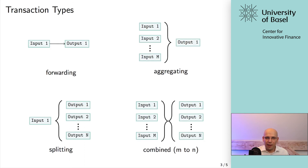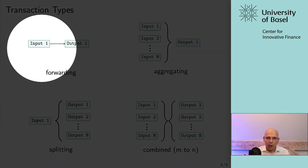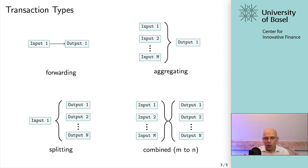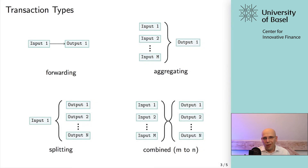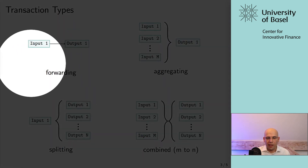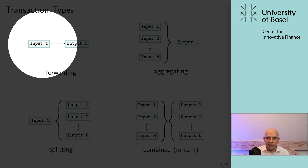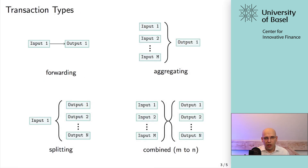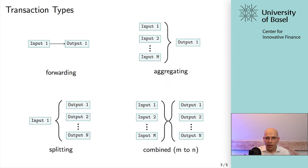There are different types of transactions. The first type, which is the easiest to explain the concept, is so-called forwarding transactions — one input and one output. You fulfill a certain condition to spend the previous unspent transaction output as an input, then add your new conditions, creating a new output under which it can be spent. Next, we have an aggregating transaction. The aggregating transaction aggregates several unspent transaction outputs — you have several inputs and it creates a single new output, accumulating and aggregating them into one.